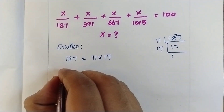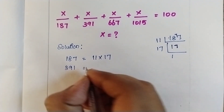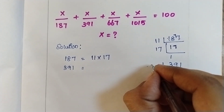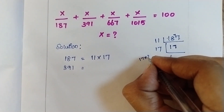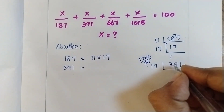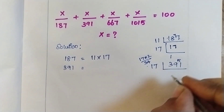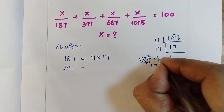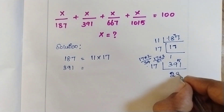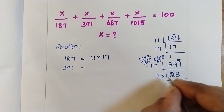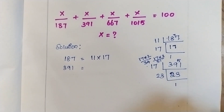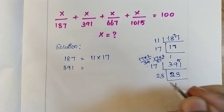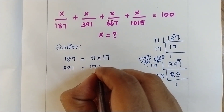Similarly we need to find the factors of 391. So let's check 391 — it comes in the 17 table. 17 twos are 34, so after 34, 5 is remaining giving 51. 17 threes are 51, so it comes 23 times. Therefore 391 is equal to 17 into 23.